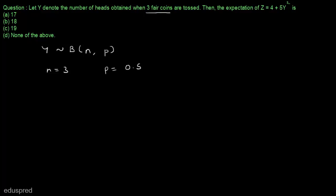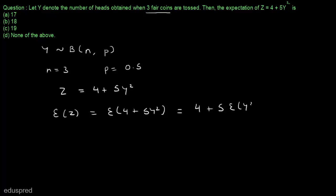Now, Z is equal to 4 plus 5Y squared, so the expected value of Z will be equal to the expected value of 4 plus 5Y squared. This equals 4 plus 5 times the expected value of Y squared. We can write this because the expected value of a constant is the constant itself, and the expected value of AX, where A is any constant, equals A multiplied by the expected value of X.